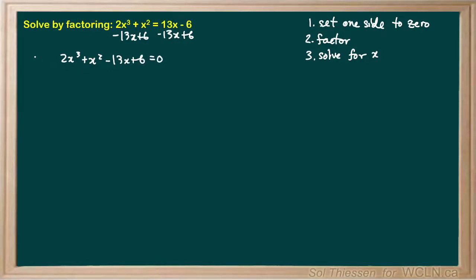I'm going to call this cubic polynomial p of x, and we're searching for the values of x that set p of x to 0. This cubic isn't factorable by grouping, which means we're going to have to apply the factor theorem. Remember we have a four-step process to apply the factor theorem to factor a polynomial.